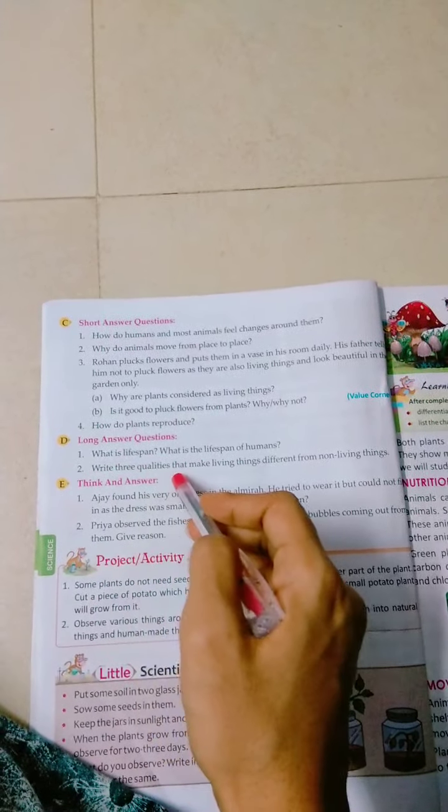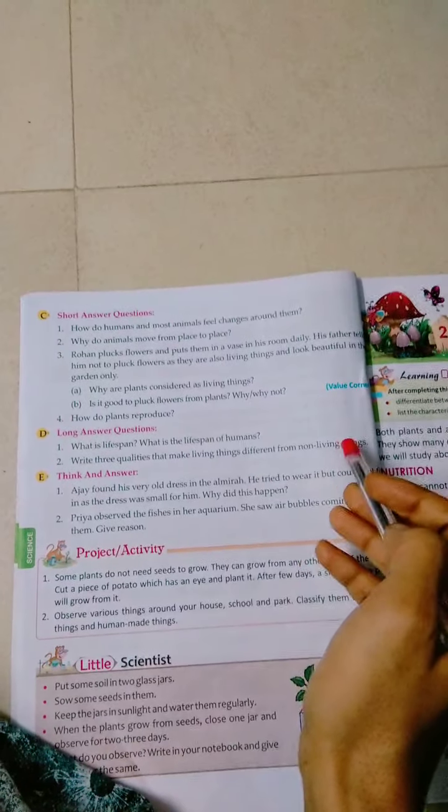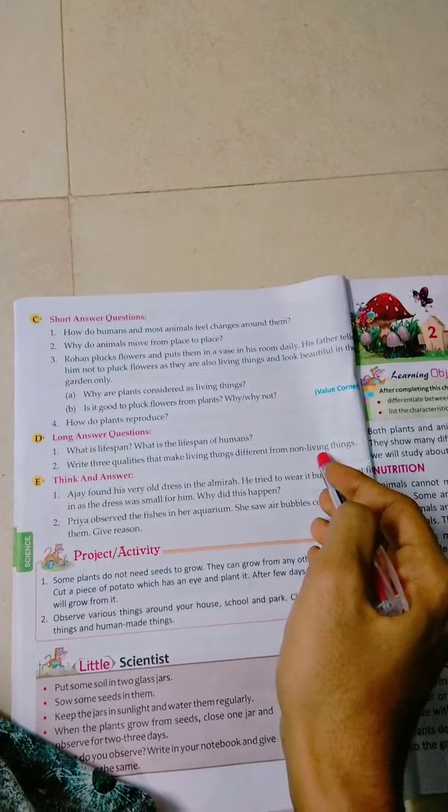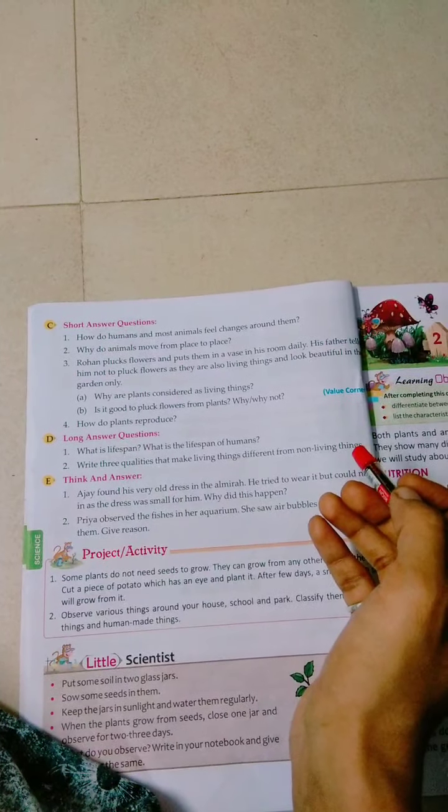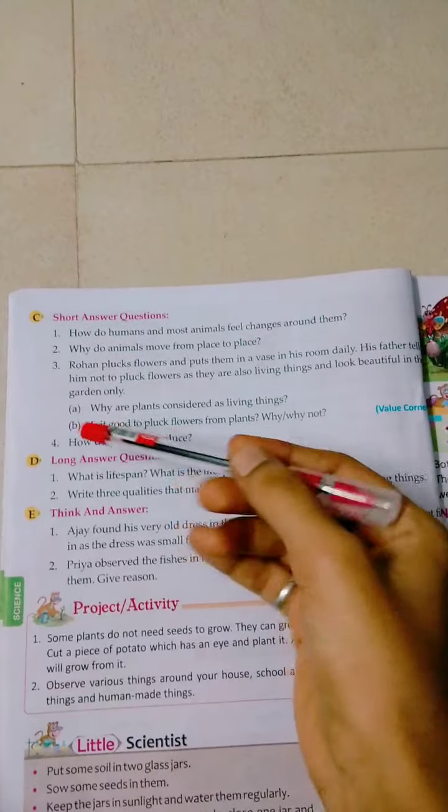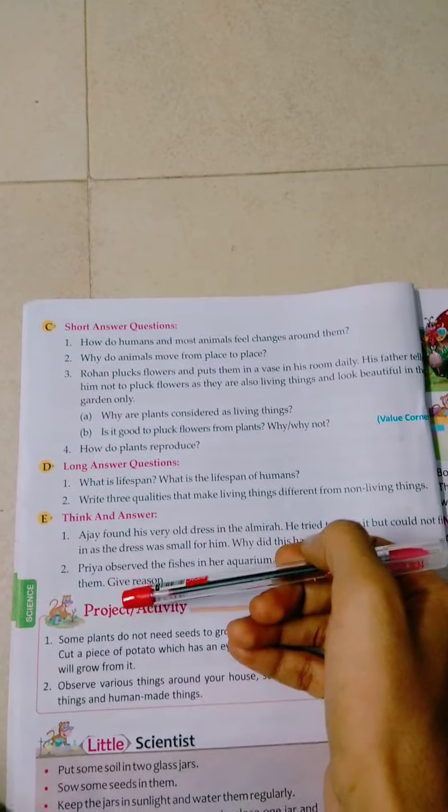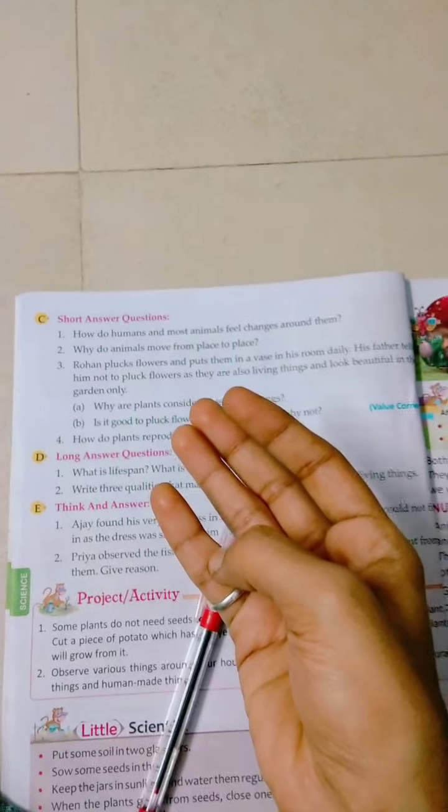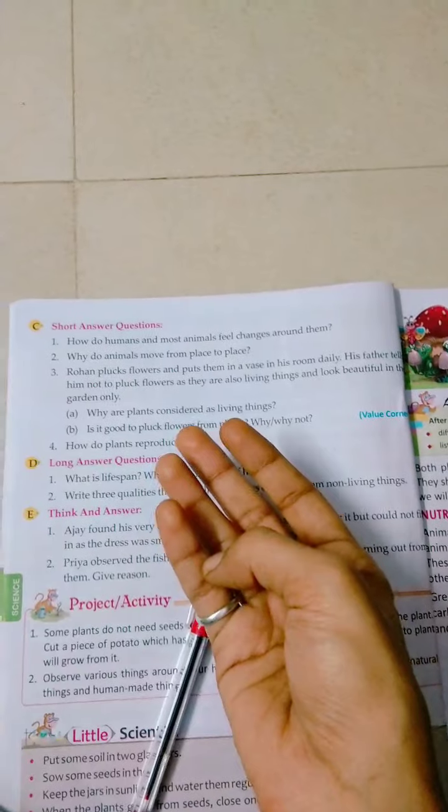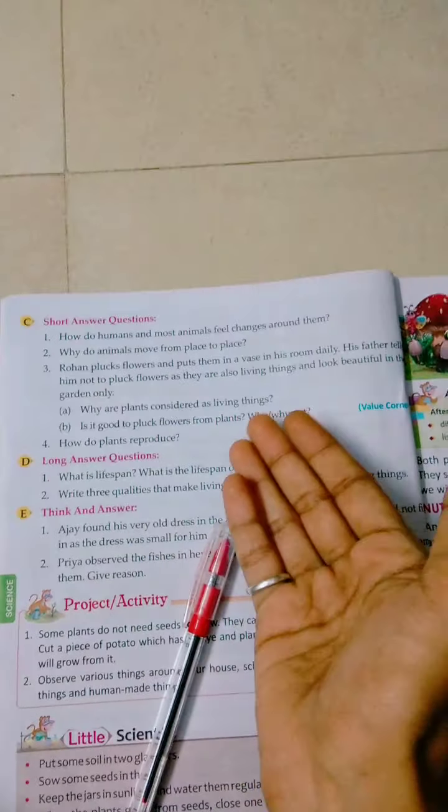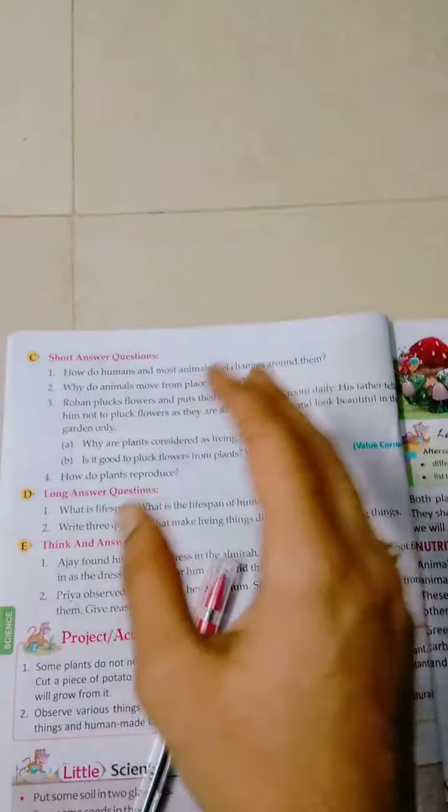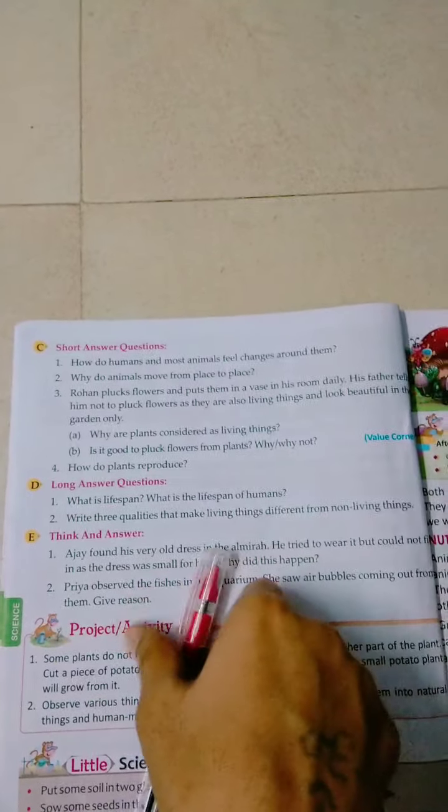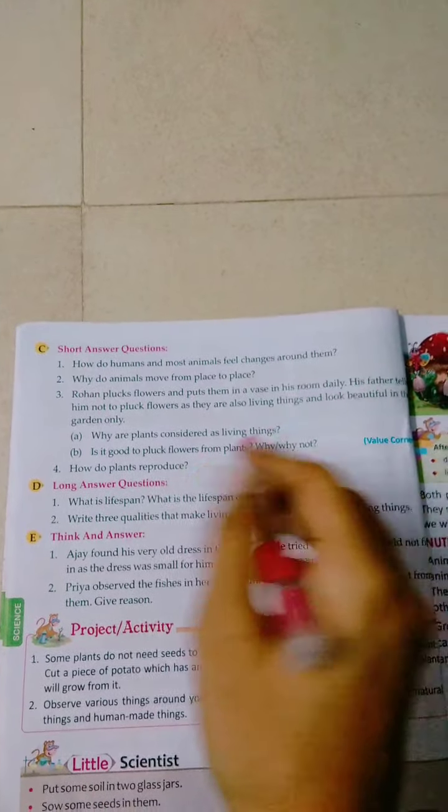Next question: Write three qualities that make living things different from non-living things. You have to write three qualities that make living things different from non-living things. Those three qualities will be - what are living things? First, living things grow. Living things feel and react. Living things need food and water. Whatever are the characteristics of living things, those are their qualities that you can write. Opposite of living things - non-living things do not grow, non-living things do not feel and react, non-living things do not need food and water. So these are the three qualities.